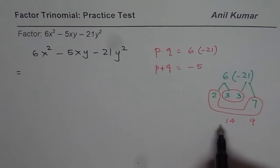And if I have to get -5, I could consider -14 as one number and +9. When you add them, we get -5. So those are the two numbers which will work for us.